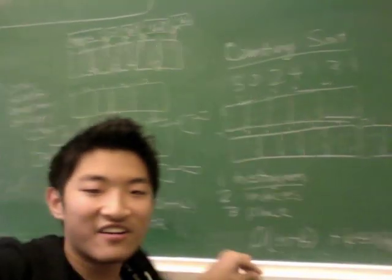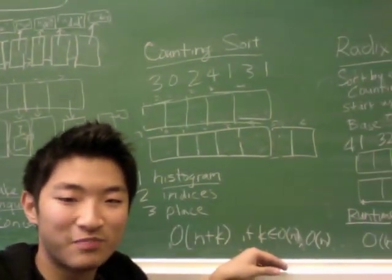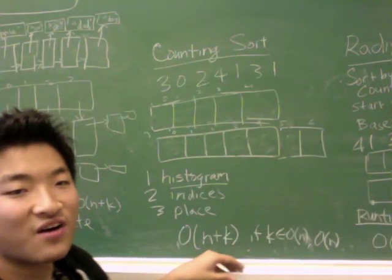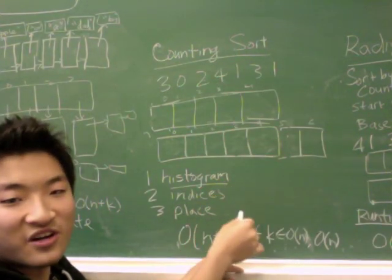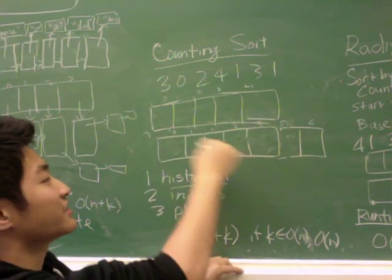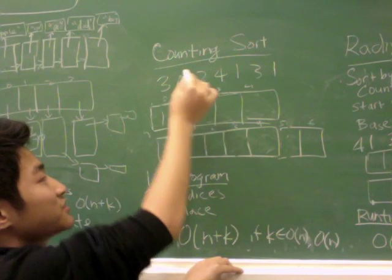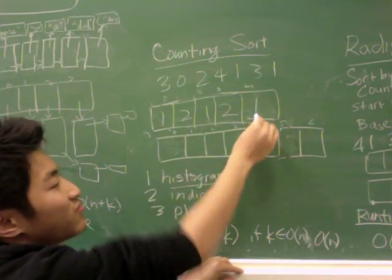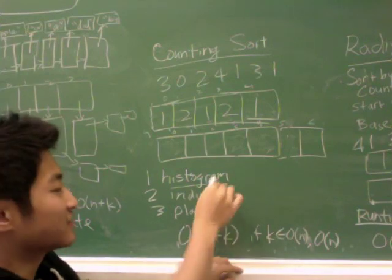Let's talk about Counting Sort now. Counting Sort is a special case of Bucket Sort where you just have the numerical keys. The first thing you want to do is create a histogram of all the keys. We need to see how many of each key there is. There's one zero, two ones, one two, two threes, and one four. Now you're done with this step.